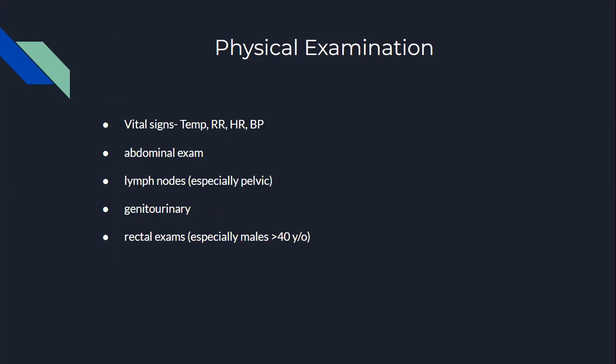For physical examination, it's important to do vital signs first. Look at temperature for any fever, respiratory rate, and note if they are struggling to breathe. Check heart rate and blood pressure, looking out for hypertension or possible sepsis. For the abdominal exam, always observe the patient's abdomen first before proceeding — then palpate while watching the patient's face for any discomfort or signs of pain. Then percuss for any hepatosplenomegaly and auscultate. Look out for any lymph node enlargement, especially within the pelvic region. Conduct a genitourinary examination, and for males above 40, conduct a rectal exam.